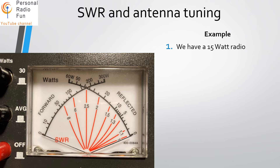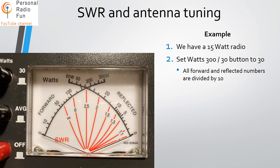Let's look at an example of how this meter works — tuning the antenna to the resonant frequency to lower the SWR. We have a 15-watt radio, and the meter can be set to a 0–300 watt or a 0–30 watt scale. Since 15 watts is less than 30, we use the 30-watt scale. On that scale, all forward and reflected numbers you see are divided by 10. So the '300' on the top scale becomes 30.0 — just move the decimal point. The 15-watt tick mark falls exactly between 10 and 20.